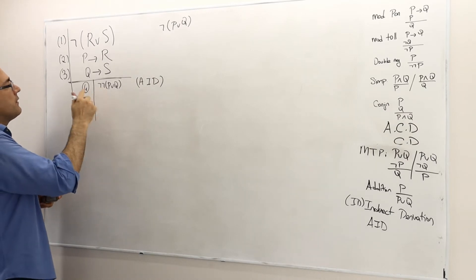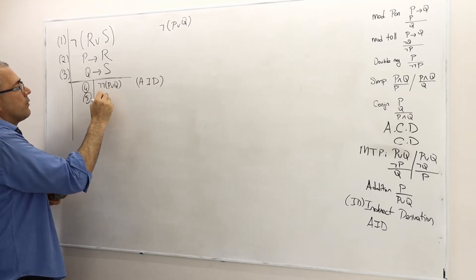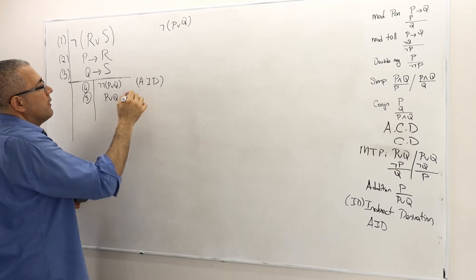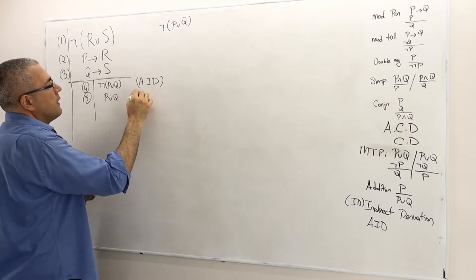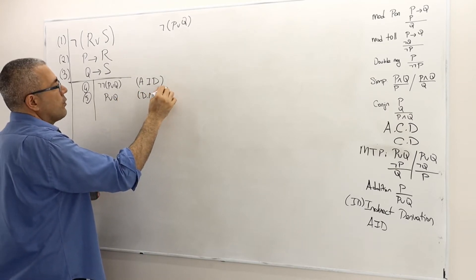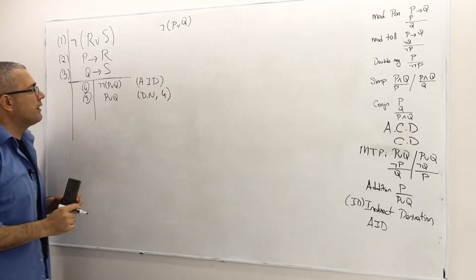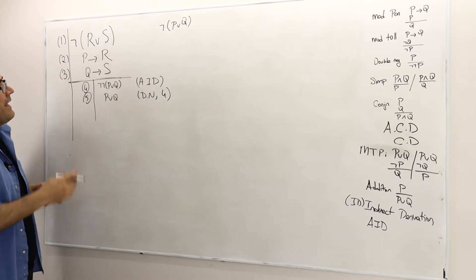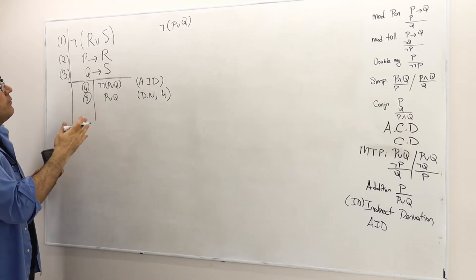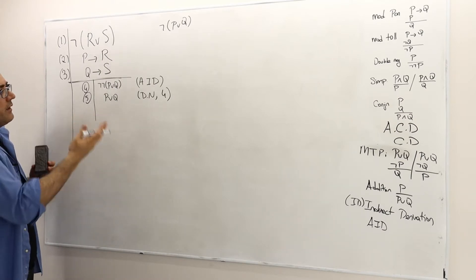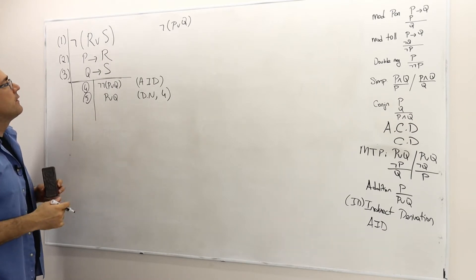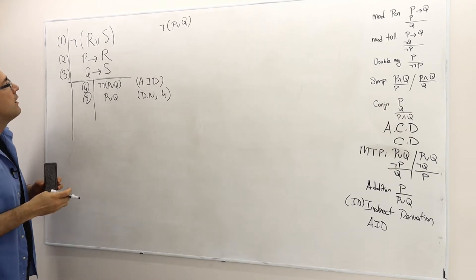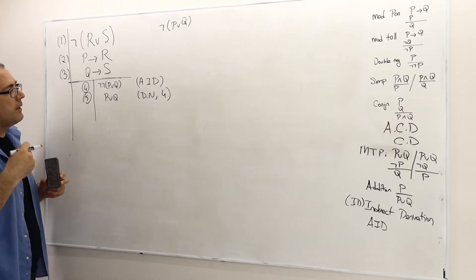This is double negation, so therefore P or Q must be true — double negation of line four. I can't really do much more than this, so I need another piece of information.